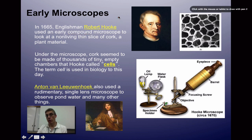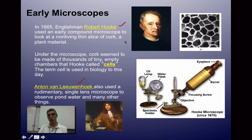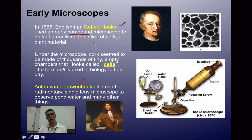Looking at this first slide, you'll notice two individuals. The person towards the top is Robert Hooke, and the person towards the bottom is Anton Van Leeuwenhoek. They're both significant in cell history because they were among the first scientists to look at things that normally could not be seen with the naked eye. Hooke used a compound microscope, which uses two lenses — one in the eyepiece and one in the objective — and those two lenses working together create a virtual image of whatever you're looking at.